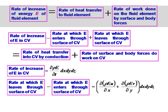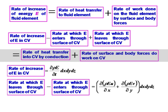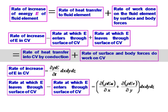But then I have to apply this for a control volume. Applying Reynolds transport theorem: the rate of increase of E in the CV — remember the energy balance E_in minus E_out plus E_generated equals E_stored. The rate of increase of E in the CV, the rate at which E enters through the surface of CV, and the rate at which E leaves through the surface of the CV.